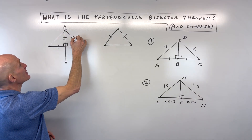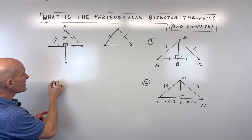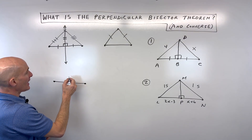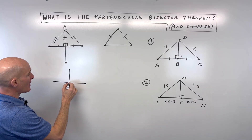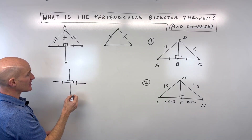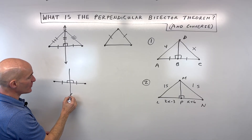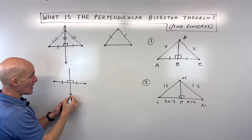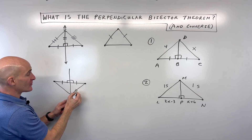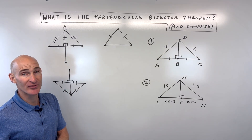So that's what the perpendicular bisector theorem is. If you have a segment and a perpendicular bisector — perpendicular at right angles, bisecting or cutting it in half — and you pick a point anywhere along that perpendicular bisector, the two distances to the endpoints have to be congruent by the perpendicular bisector theorem.